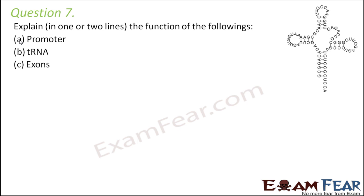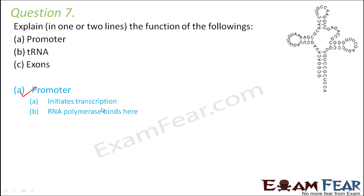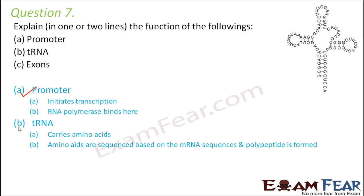Question number seven: explain the function of the following — promoter, tRNA, and exons. The promoter is that region of the DNA transcription unit that initiates the process of transcription by allowing RNA polymerase to bind to it. Transfer RNA carries amino acids and is extremely important for translation — on one end it can read the mRNA sequence, and on the other end it binds to an amino acid, ensuring the correct amino acid is placed at the corresponding mRNA sequence.